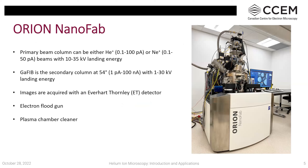This instrument is a dual ion instrument with two columns, similar to a FIB-SEM. In the primary vertical column, you can use either a helium or neon ion beam. At 54 degrees from that is the secondary column, which is the gallium Canion focused ion beam used by Zeiss on other FIB-SEM instruments. So you have access to three beams. An important feature is the electron flood gun, which neutralizes positive charge accumulation on the sample.